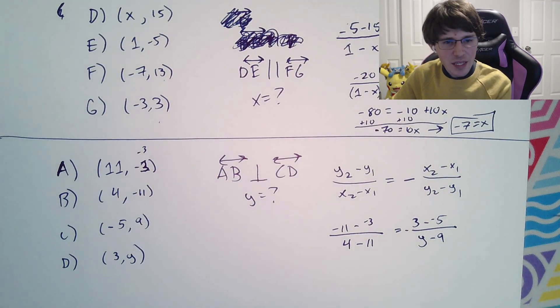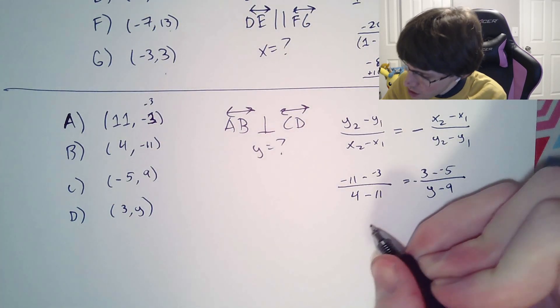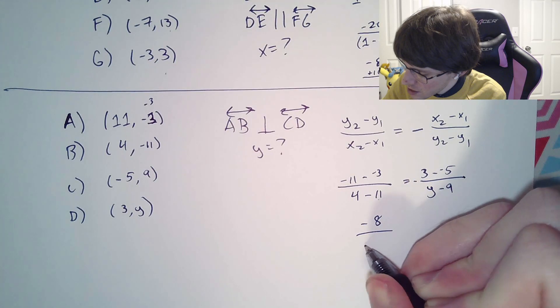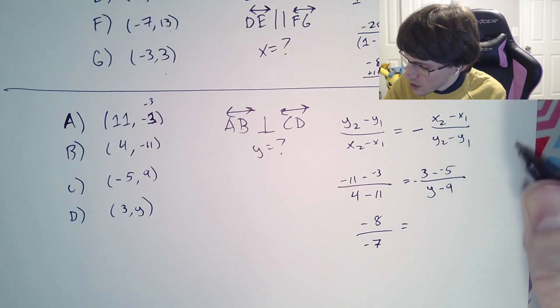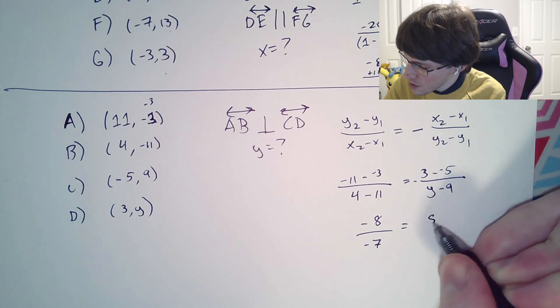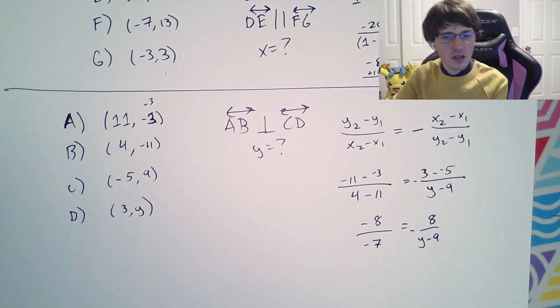Don't forget the negative in front of the whole thing. Divided by, and now we have our y2 minus our y1. Just like the previous question, now we need to simplify this whole thing. Negative 11 minus negative 3 is going to be negative 8. 4 minus 11 is negative 7. And then a 3 minus a 5 is 8. And a y minus 9. And don't forget there's a negative in front of the entire thing.